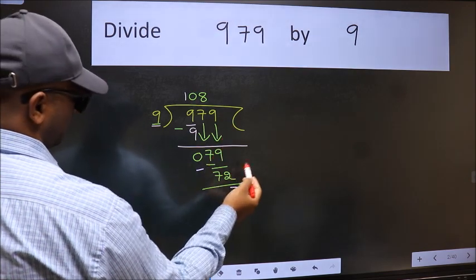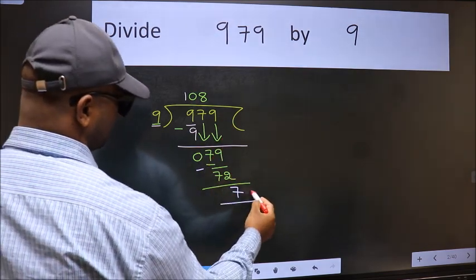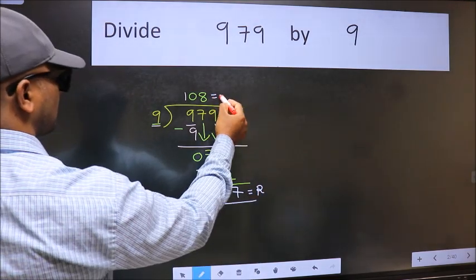No more numbers to bring down. So we stop here. This is our remainder and this is our quotient.